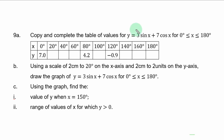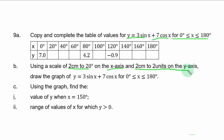Question 9A. Copy and complete the table of values for y equal to 3 sine s plus 7 cos s, for 0 degrees less than or equal to s less than or equal to 180 degrees. You have the table of values with some missing values for y, and you are expected to find them. Using a scale of 2cm to 20 degrees on the s-axis and 2cm to 2 units on the y-axis, draw the graph of y equal to 3 sine s plus 7 cos s over the given range of values of s.